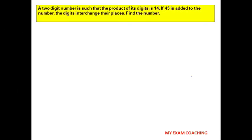The next question: a two-digit number is such that the product of its digits is 14. If 45 is added to the number, the digits interchange their places. Find the number.